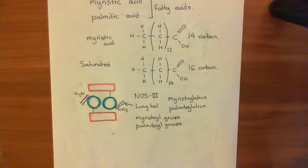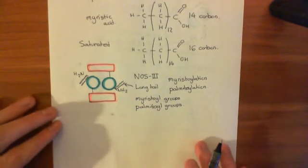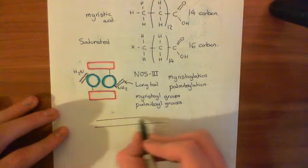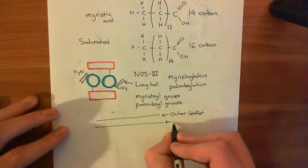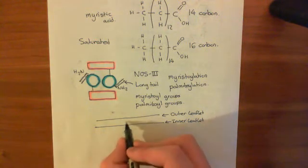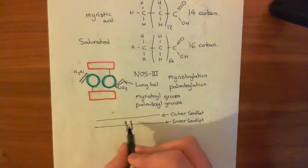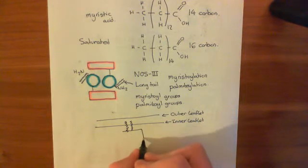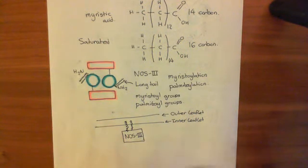The overall outcome is that you've got these long-chain carboxylic acid tails pointing out from the protein, and they implant into the inner leaflet of the phospholipid bilayer. Drawing the bilayer as two lines — the outer leaflet and the inner leaflet — the palmitoyl and myristoyl groups implant into the hydrophobic core, attaching the NOS-3 enzyme to the membrane. That's how you get targeting of NOS-3 to the membrane of endothelial cells.